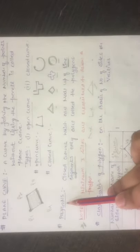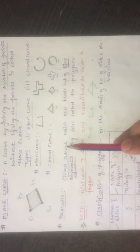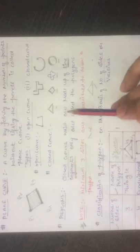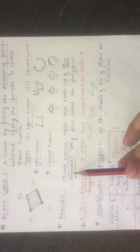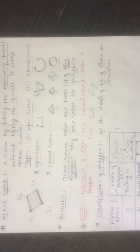Now, polygons. A polygon is a closed curve which is made up of line segments - this is very important. Whatever closed curve you are taking, that closed curve must be made up of only line segments to be called a polygon.